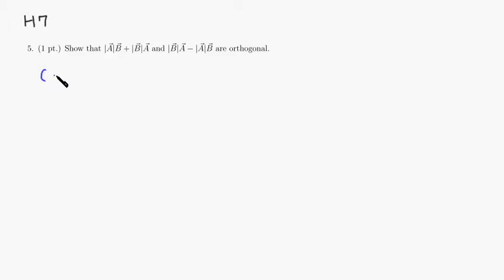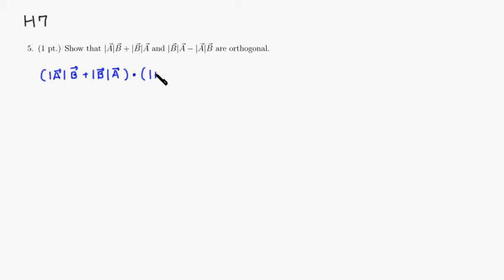So we have the magnitude of vector A times vector B, plus the magnitude of vector B times vector A. We're going to take the dot product of that with the magnitude of vector B times vector A, minus the magnitude of vector A times vector B. We just need to multiply it out.